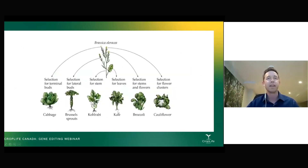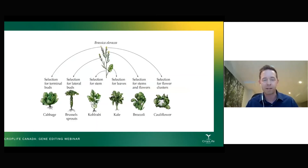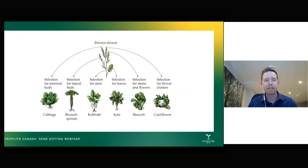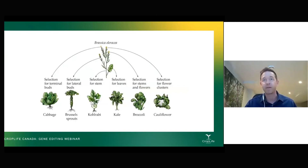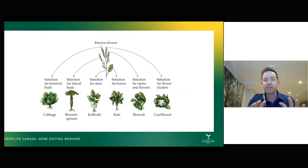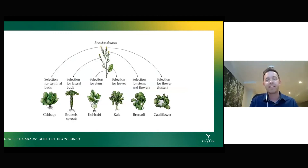That's what plant breeding is all about. One of my favorite examples: if you take Brassica oleracea — wild cabbage, sometimes called wild mustard — you are selecting for different things you like to eat from that plant. If you like terminal buds, you select for those and eventually it starts to look like cabbage. If you just like the stem, it starts to look like kohlrabi. Brussels sprouts, kale, broccoli, cauliflower — they're all the same plant. They're all wild cabbage, just expressing different elements of their genes more than their counterparts.